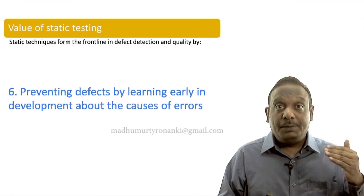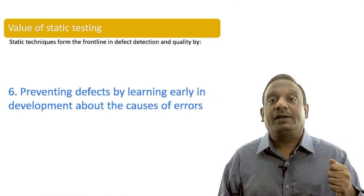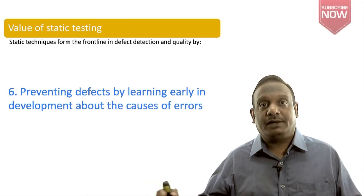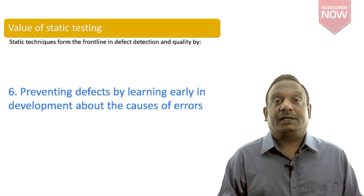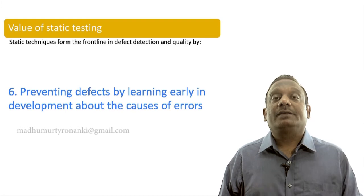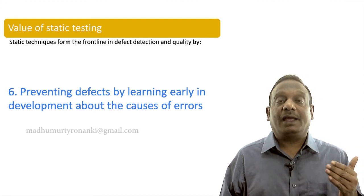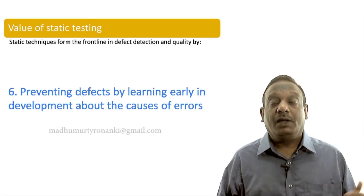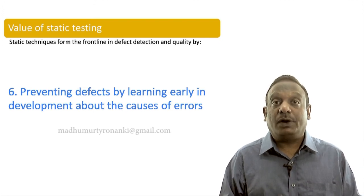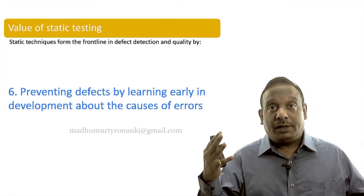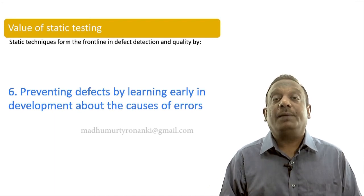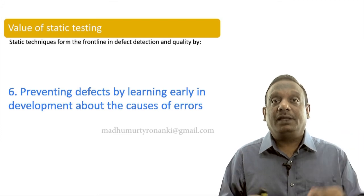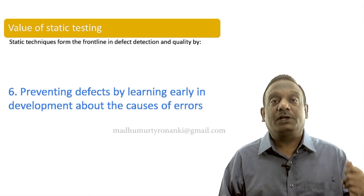The sixth value is that by improving processes, you gain the ability to prevent defects by learning early about the causes of errors. If you remove the causes of errors, people will not make mistakes and defects won't leak. Looking at all the values together — because static testing can be performed early and on a variety of artifacts, applying intelligent people and tools more economically — we gain many benefits. Though everyone agrees static testing is beneficial, companies often face challenges deploying the right mechanisms. But these are very valuable techniques when you are in charge of managing software quality.